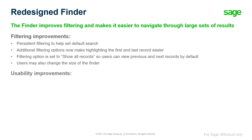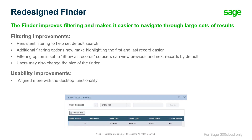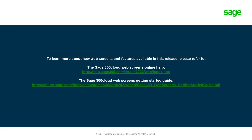This improved finder is now available on all web screens and is more aligned with desktop functionalities, such as keyboard shortcuts that can be used to navigate through results and select records. More information on web screens can be found on the Sage 300 Cloud web screens online help page or in the Sage 300 Cloud web screens getting started guide.